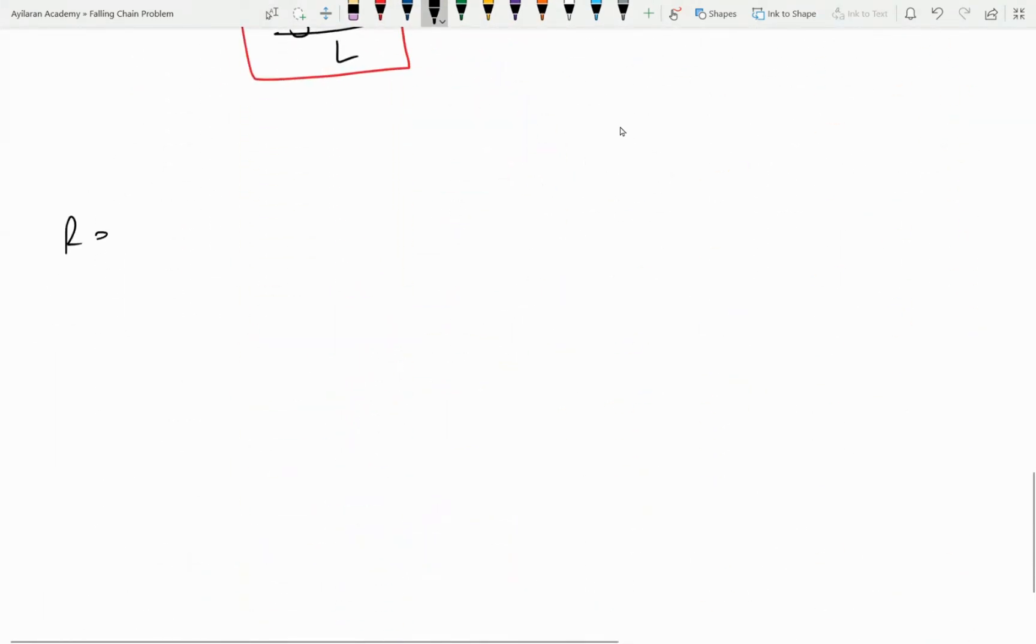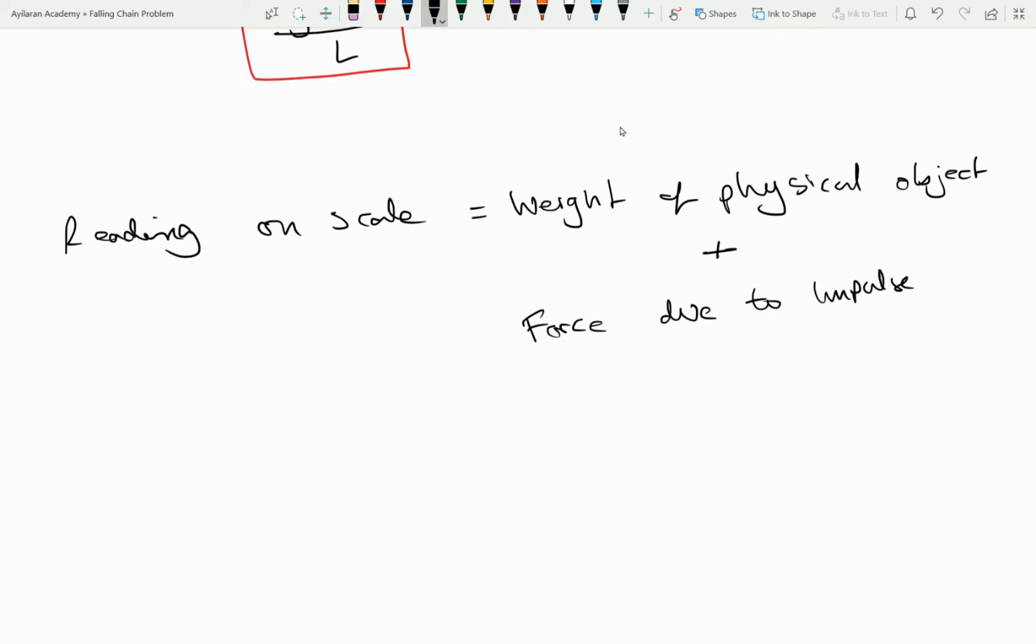So we have our two expressions therefore once again the reading on the pan scale is due to not only the weight of the chains due to gravity on the pan but also due to the change in impulse of the chains hitting the pan. So the general solution involves adding our two expressions together.